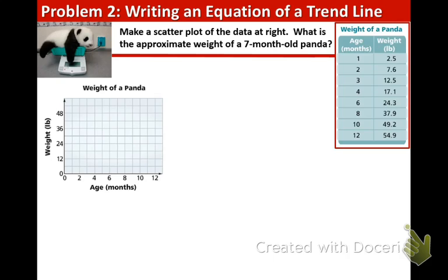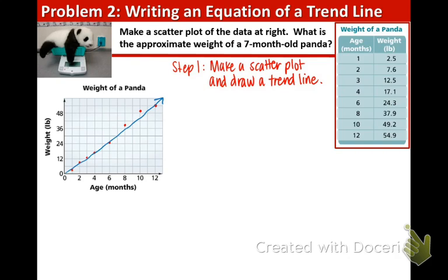Now we're ready for example 2, about pandas. Make a scatter plot of the data at right. What is the approximate weight of a 7-month-old panda? Our first step is that we want to make a scatter plot and draw a trend line. Now when we draw this trend line, there should be about the same number of points above the line as below it. So now we are going to plot the points in the table. Okay, we have our points plotted, and now we are going to draw the trend line.